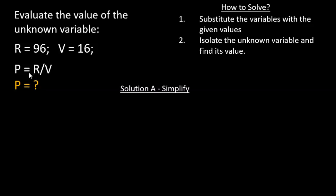We place the known values and try to find the unknown value. P equals R divided by V, so it's 96 divided by 16.